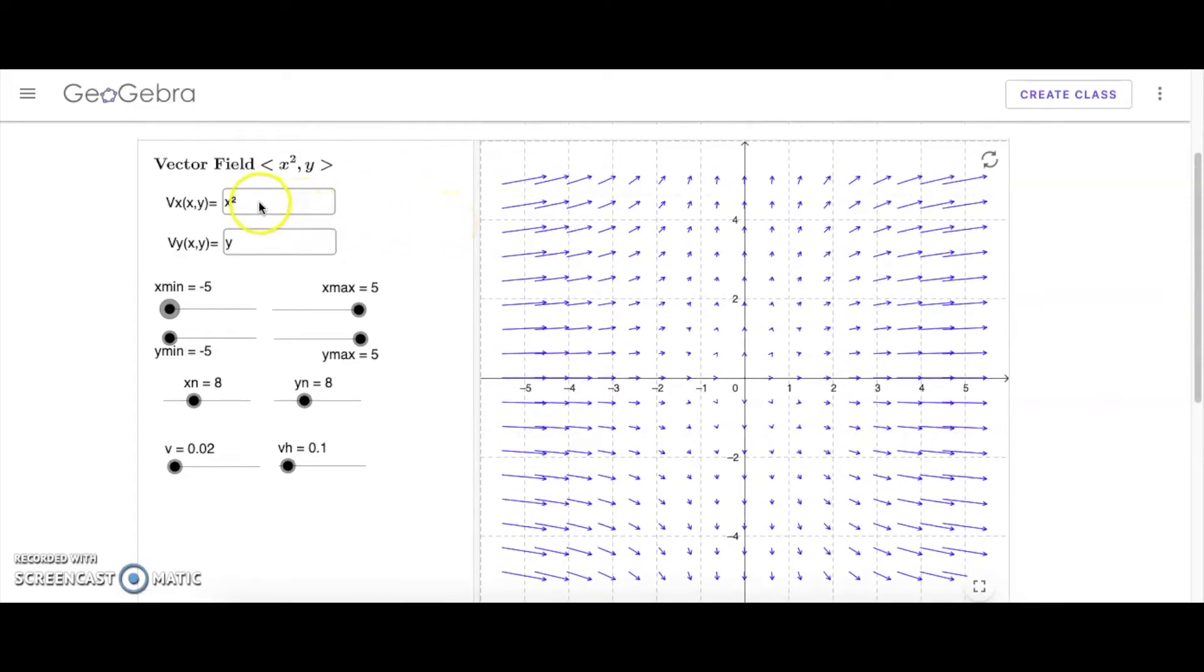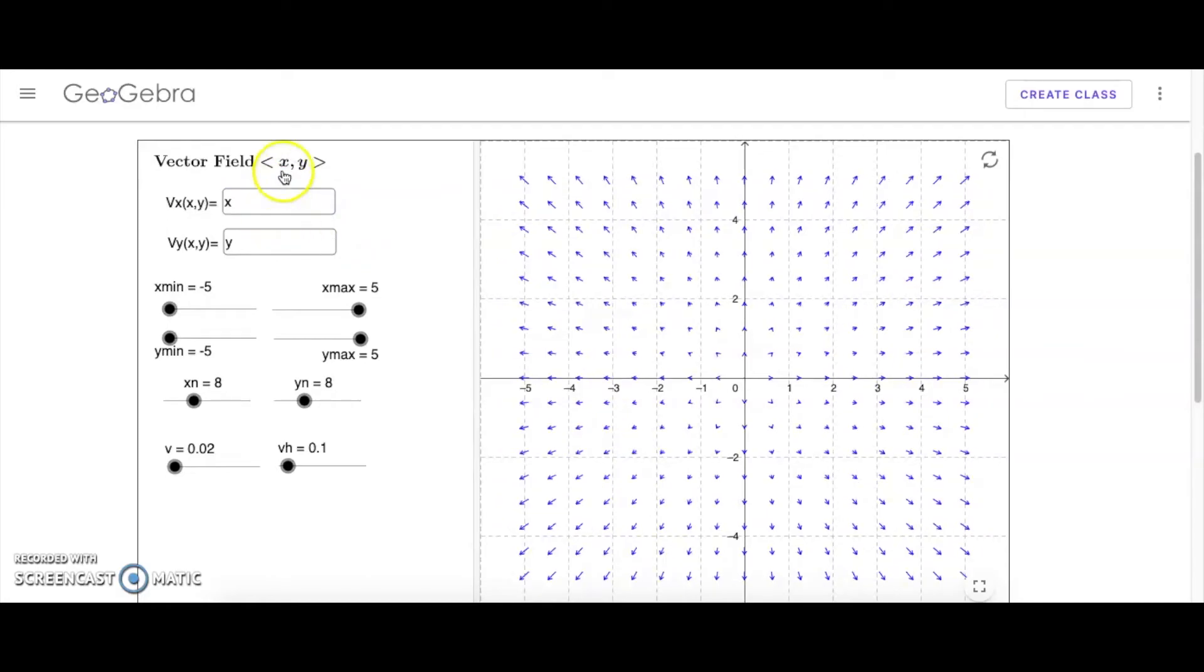And it's pretty easy to use. You simply enter in the x and y components of the vector field that you're after. So suppose we wanted a simple one like xy. It displays the vector field here. It shows you a graph of the vector field.